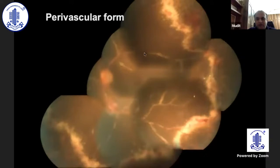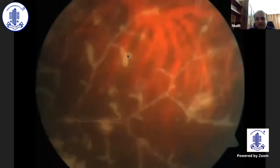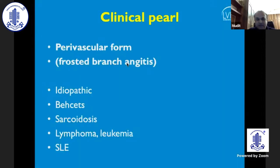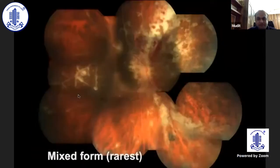You may also see a perivascular form — frosted branch angiitis — where you see extensive angiitis or involvement around the vessels. However, frosted branch angiitis can also be seen in Behcet's disease, sarcoidosis, sometimes in lymphomas, leukemias, and SLE, and it is sometimes idiopathic. Rarely, you can see a mixed form with both frosted branch angiitis and the extensive fulminant form.